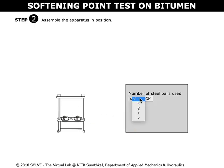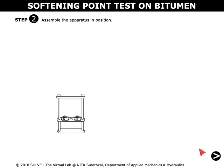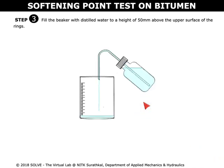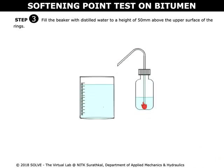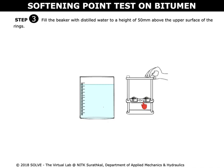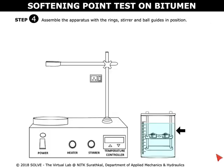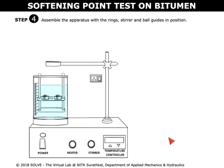Answer the pop-up question correctly to proceed to the next step. Click here to fill the beaker with distilled water to a height of 50 mm above the upper surface of the rings. Place the sample inside the beaker. Click on the apparatus to place it in position inside the ring and ball apparatus.